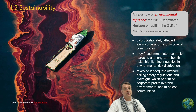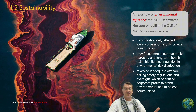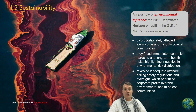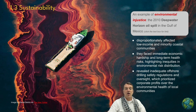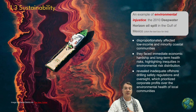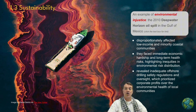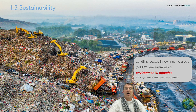The 2010 Deepwater Horizon oil spill in the Gulf of Mexico, previously discussed in Topic 1.1, is an example of environmental injustice because it disproportionately affected low-income and minority coastal communities. The immediate economic hardship and long-term health and environmental risks revealed inadequate safety regulations that prioritized corporate profits over local environmental health and the well-being of those coastal communities where the environmental impacts were most felt.